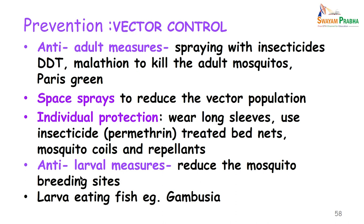Prevention of malaria is primarily by vector control. Anti-adult measures include spraying of insecticides like DDT and malathion or Paris green to get rid of adult mosquitoes, and space sprays are also used. Individual protection involves wearing long sleeves and socks, using insecticide-treated bed nets, mosquito coils, and repellents. Anti-larval measures reduce mosquito breeding sites, and gambusia — larva-eating fish — can be added in areas of water collection.